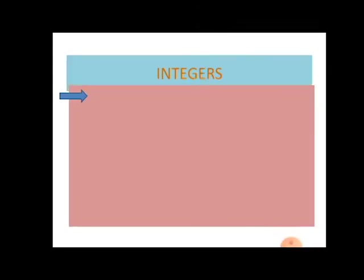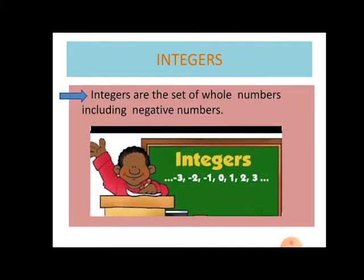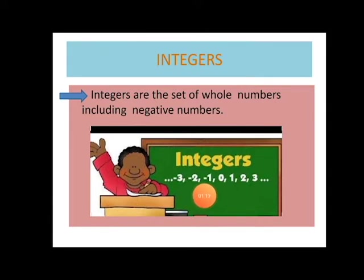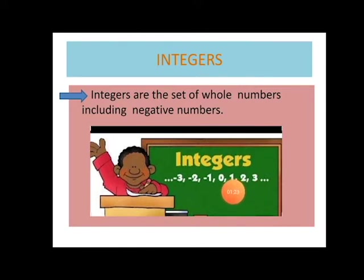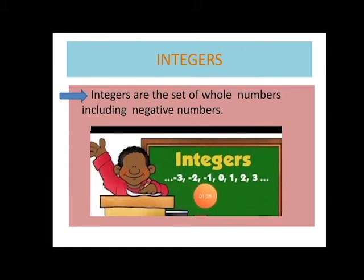Now let us learn what are integers. Children, integers are the set of whole numbers including negative numbers in it. As you can see on the screen, the numbers are minus three, minus two, minus one, zero, one, two, three and so on. When we include zero with the counting numbers they form whole numbers, and when you move to the left direction of zero we can see the numbers present with the negative sign — these are negative numbers.